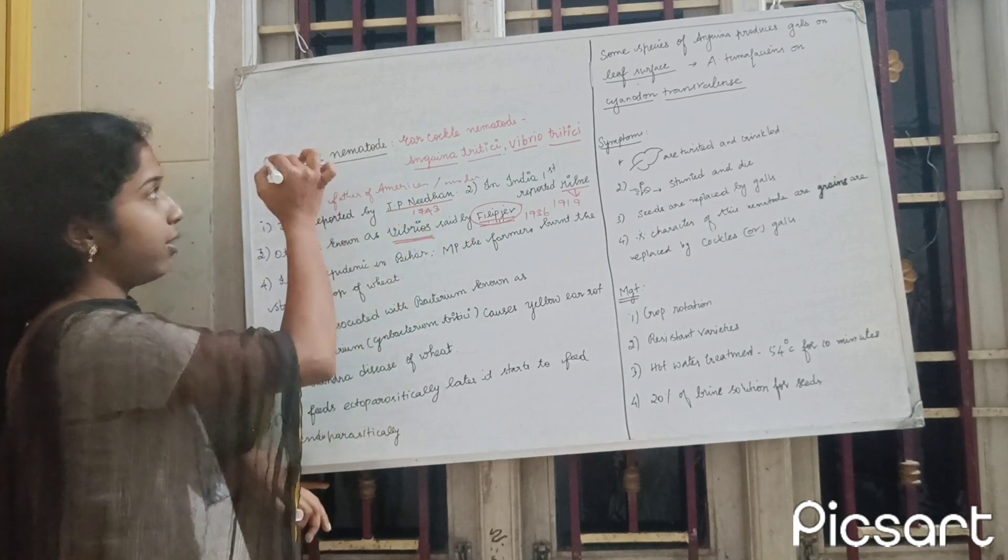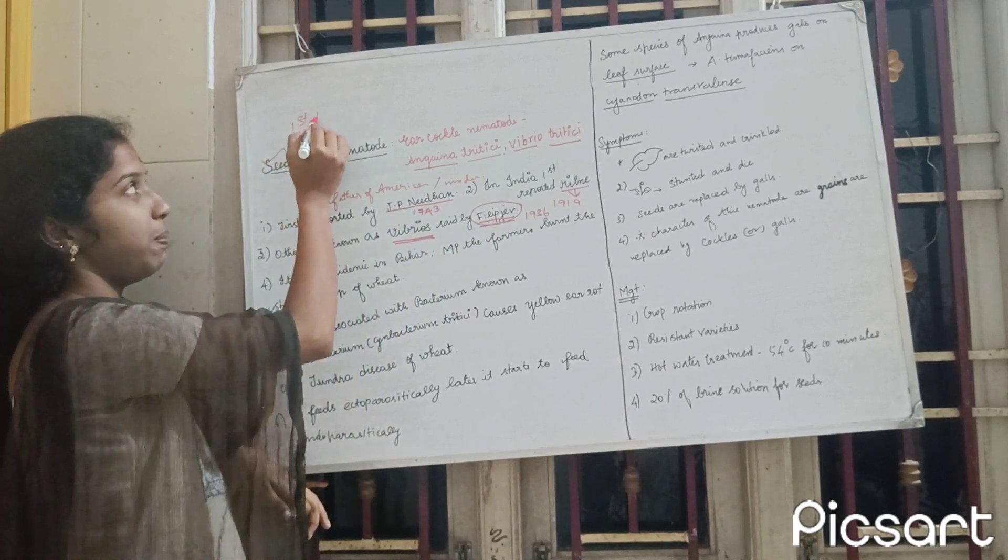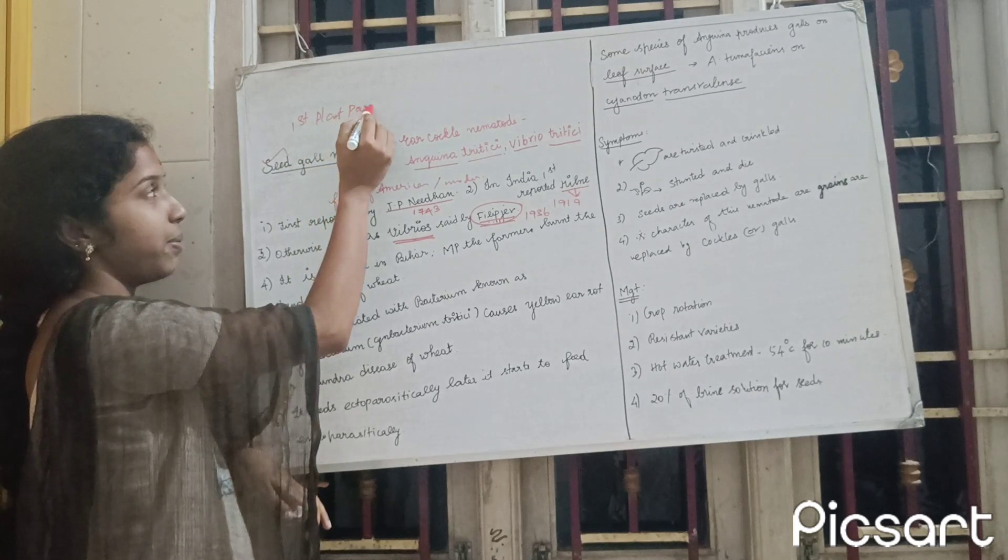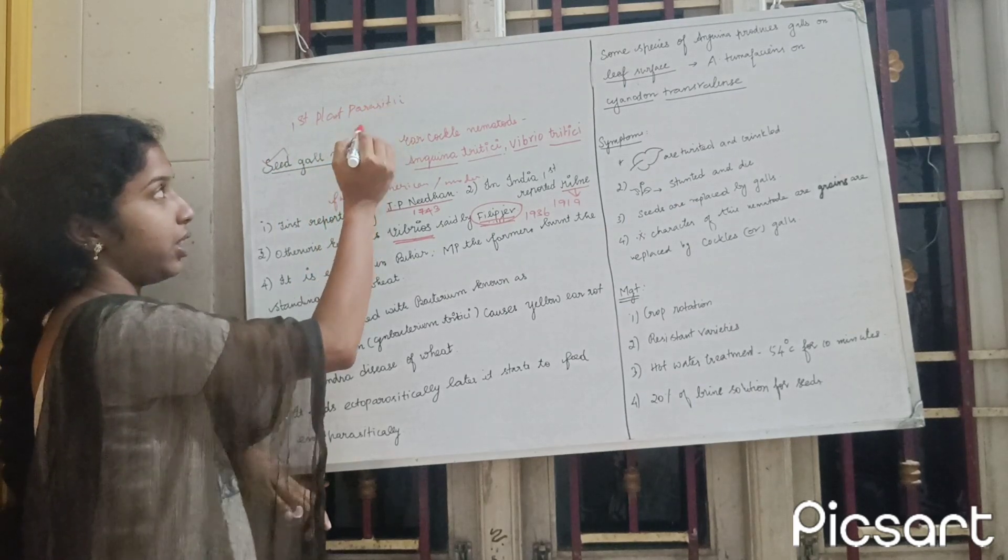So seed gall nematode is the first plant parasitic nematode.